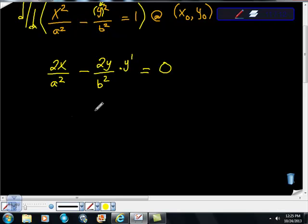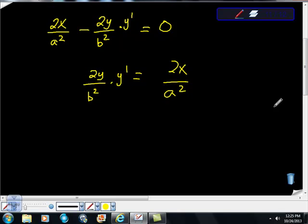so I'm going to get negative 2y/b squared times y prime is equal to negative 2x over a squared. I'm just showing you this. I'm going to multiply the whole thing by negative 1, so negative 1 times this whole thing makes this negative go away and this negative go away, that's all fair algebraically.